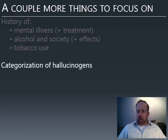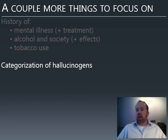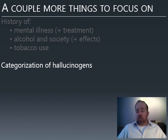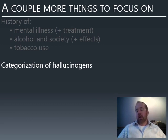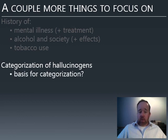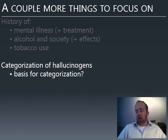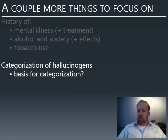The hallucinogens are an interesting category because there are quite a few of them, and there are a number of sub-categories, which makes them somewhat unique in the course — because those categories actually have different effects. Be sure you understand what those different categories are, what belongs to them, and what those categories are based on: is it a chemical designation, or is it a categorization based on the drug's effects?